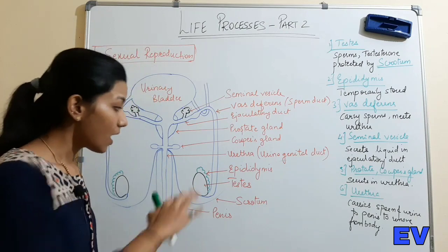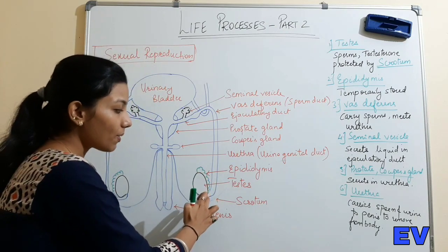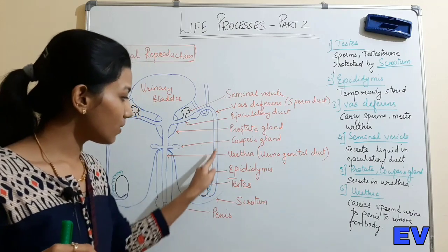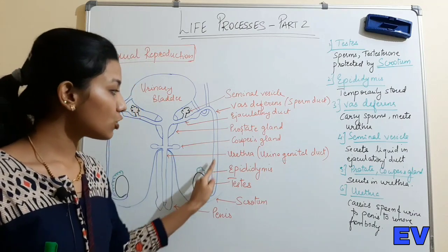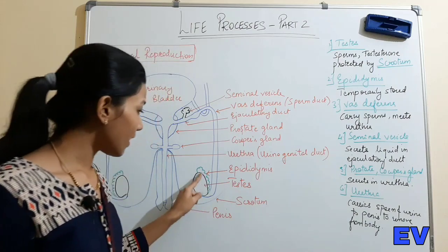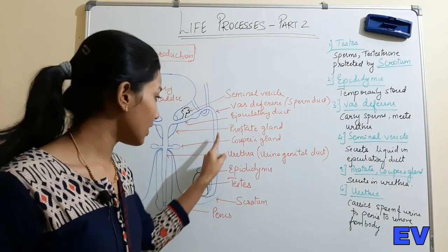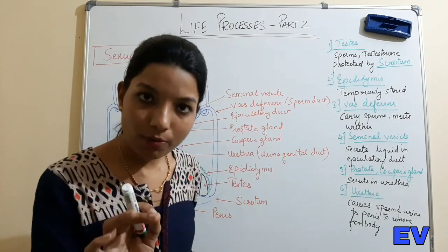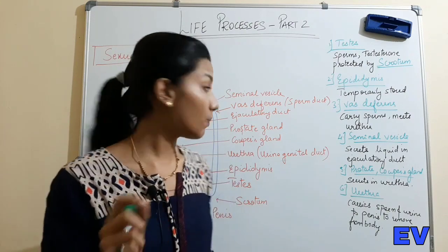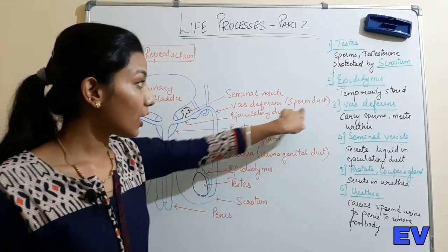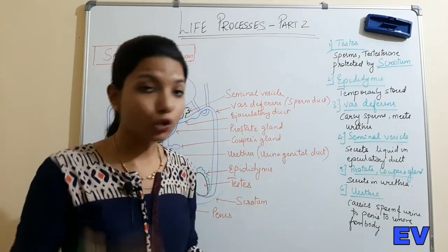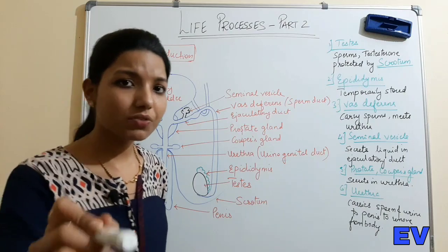Once stored in the epididymis, the sperms then move out. They travel through a blue-colored tube. This tube carries the sperms from the epididymis, so it is called the sperm duct or vas deferens.